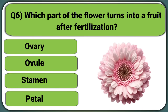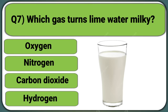Which part of the flower turns into a fruit after fertilization? Ovary, Ovule, Stamen, or Petal. Answer: Ovary.